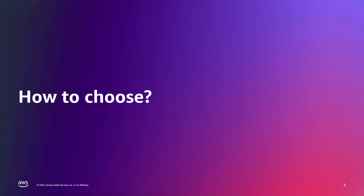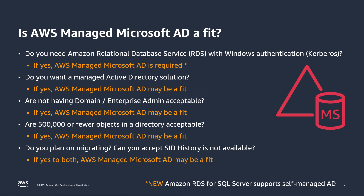So how do you choose between these Active Directory solutions on AWS? Starting with AWS Managed Microsoft AD, the first question I ask customers is: do you need to use Amazon RDS with Windows Authentication or Kerberos Authentication? If yes, AWS Managed Microsoft AD is required. Note that we recently launched Amazon RDS for SQL Server support for self-managed AD — that is the only RDS type that currently supports self-managed AD. All other RDS types still require AWS Managed Microsoft AD for Windows/Kerberos Authentication.